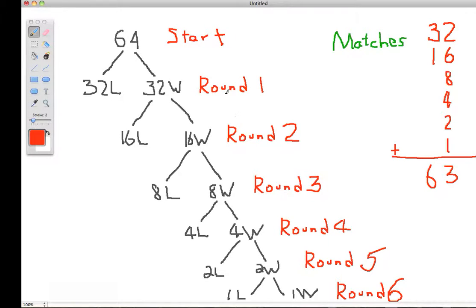Then at the end of the first round, we begin the second round. We take only the winners here and half of them play the other half. So we have 16 losers and 16 winners in round two. So then we go to round three where half of these players play the other half and we end up with eight losers and eight winners in round three.